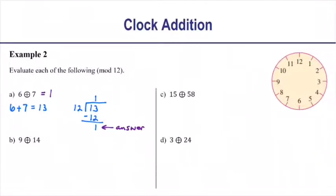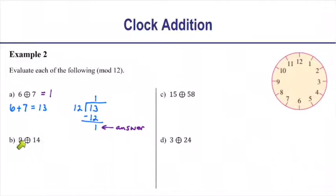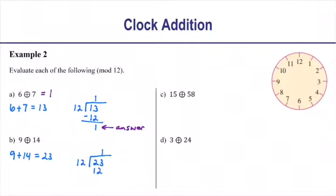Let's verify by counting on the clock: start at 6 and add 7, counting 1, 2, 3, 4, 5, 6, 7 — we stop at 1. Now let's think about 9 circle-plus 14. Without the circle, 9 plus 14 adds up to 23. That's bigger than 12, so we divide 12 into it: 12 goes into 23 one time with 11 left over. So 9 circle-plus 14 is 11.